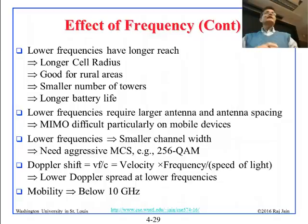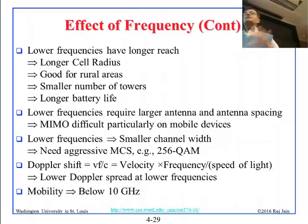Doppler shift is V times F divided by C. High frequencies produce high Doppler spread because Doppler shift is proportional to frequency. Low frequencies have low Doppler spread, so devices can move at high speeds without much issue. In practice, for mobile cellular applications, frequencies need to stay below 10 GHz.